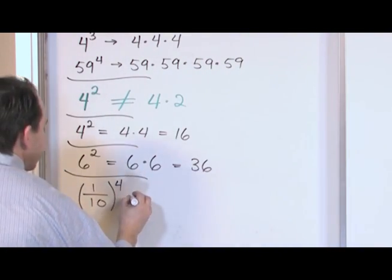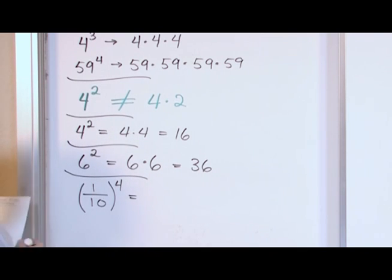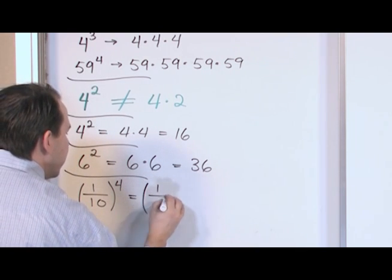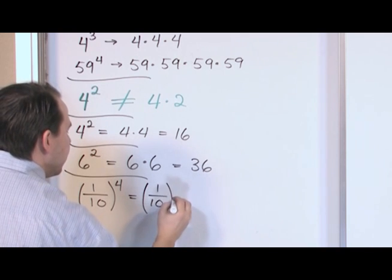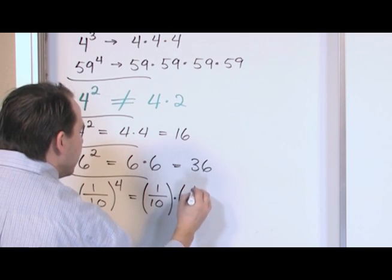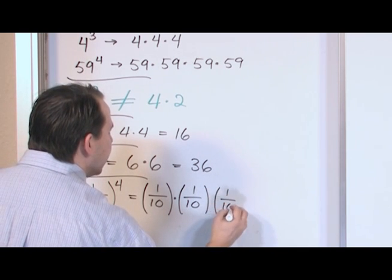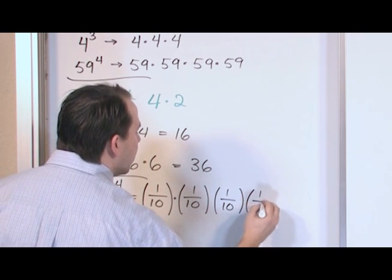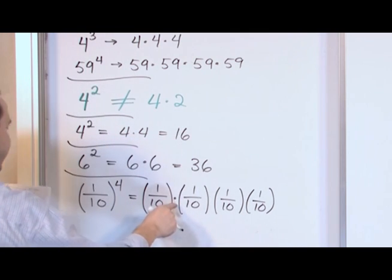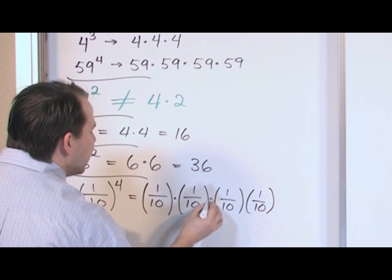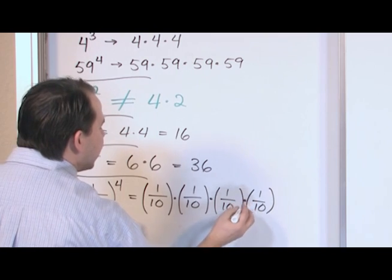So in this case, what this is going to be is to use parentheses again to get you familiar with it. One-tenth, multiply by one-tenth, multiply by one-tenth, multiply by one-tenth. Now I'm putting a dot in here, but really, when you put parentheses right next to each other like that, it means multiplication. But for now, I'll just keep putting the dots.